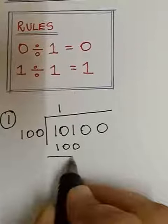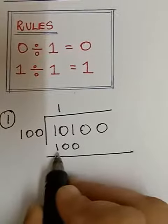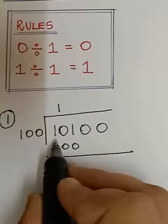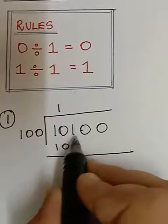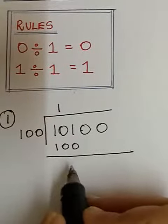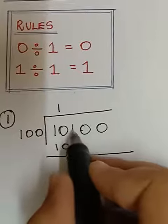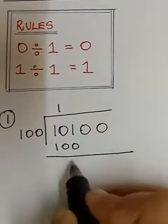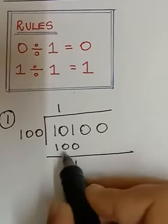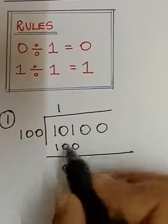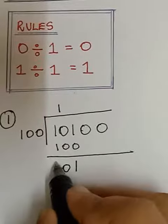And now we have to separate this 100 from 101. It's like a normal division only. So when you separate 1 minus 0 is 1, 0 minus 0 is 0 and 1 minus 1 is 0.